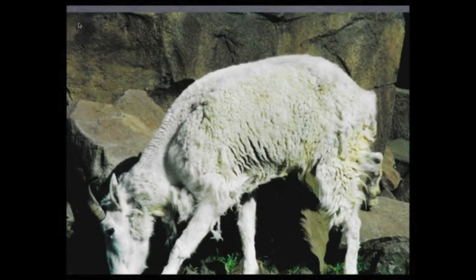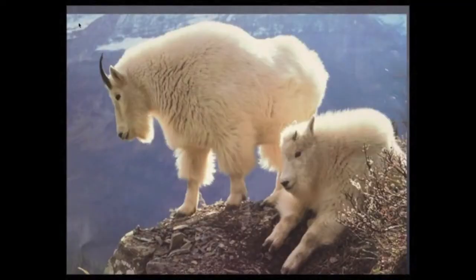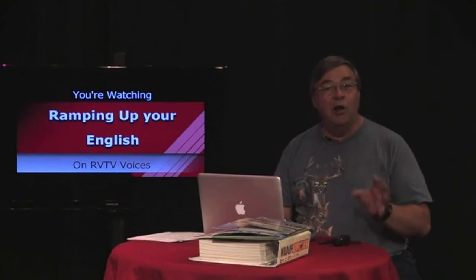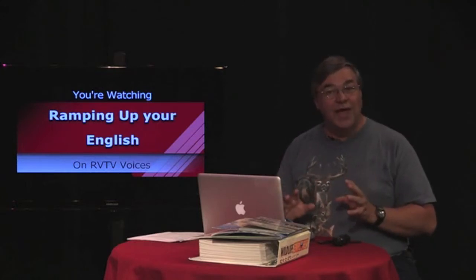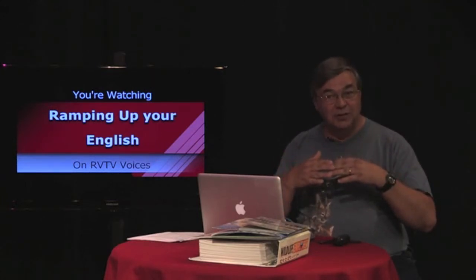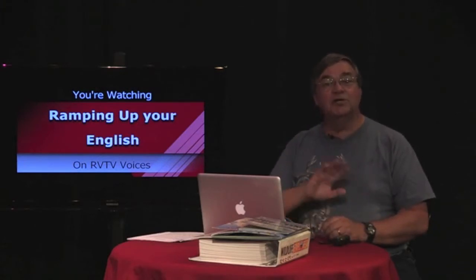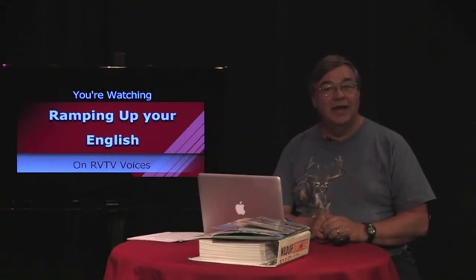Mountain goats are agile climbers, ascending steep slopes to avoid predators. Small herds of females raise their young, while the males lead a solitary life until the rutting season. Mountain goats range from north slopes above timberline to south-facing slopes at lower elevations. During the warmer months, mountain goats roam through an area of 14 square miles. These elevations form what's called an alpine habitat — alpine simply means high elevation. There is some overlap in the range of mountain goats and bighorn sheep, but most of the mountain goat range extends much further north, through northwest Canada and into Alaska.